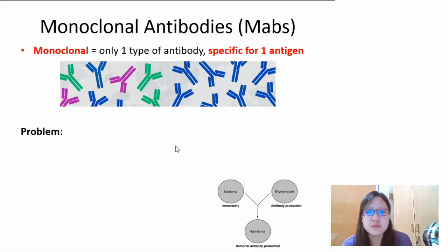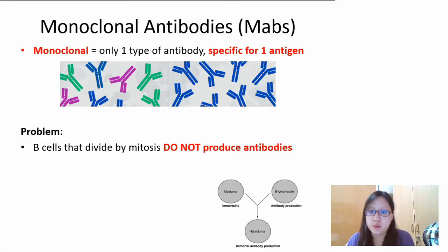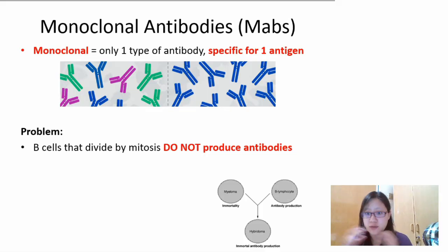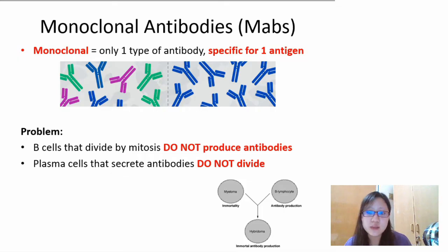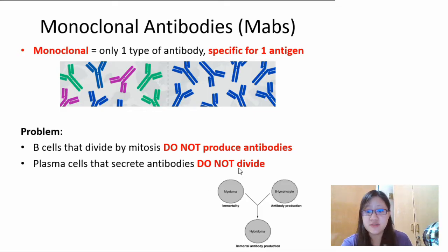This is the problem when it comes to manufacturing antibodies in labs. B cells that divide by mitosis — if you isolate them, they do not produce antibodies. These are activated B cells, but they have not differentiated into plasma cells. They can divide by mitosis, but they do not produce antibodies. However, if you take the plasma cells that have been differentiated, they can secrete antibodies, but they do not divide by mitosis. So it's very hard to get a single antibody and a lot of that one type, because it doesn't divide in a lab.